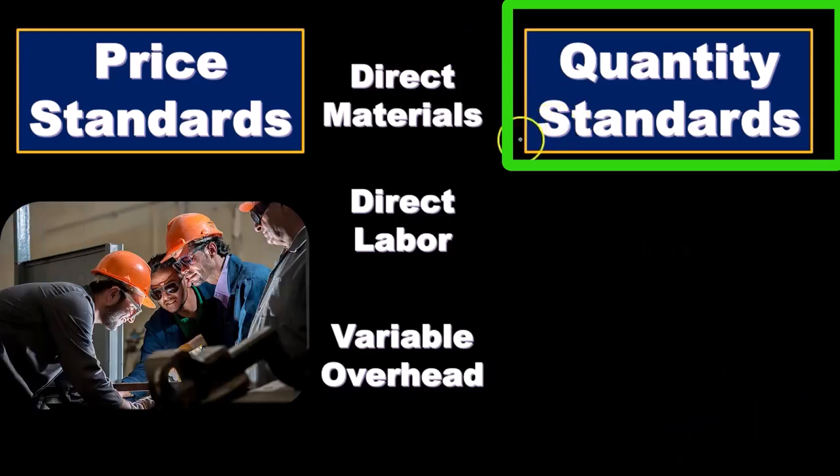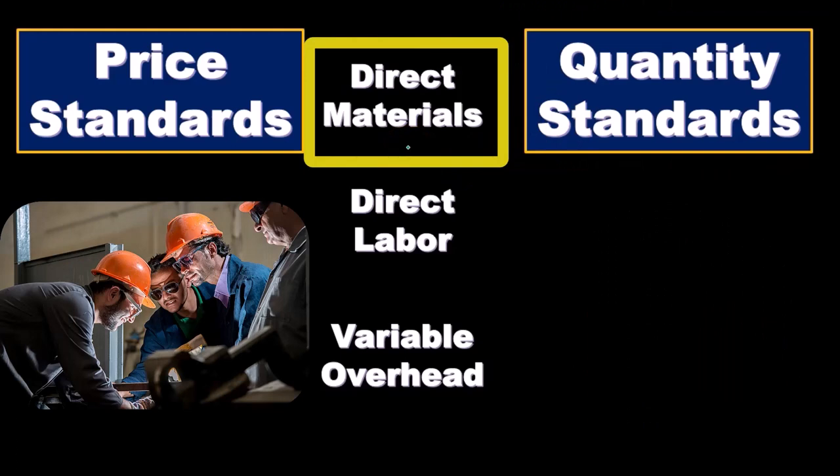The direct materials will be broken down into the component parts of the standard cost: the price standards — what's the standard price for the material — and the quantity standards — how much of a material does it typically take to make a unit.